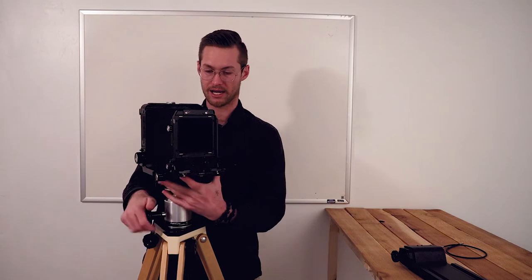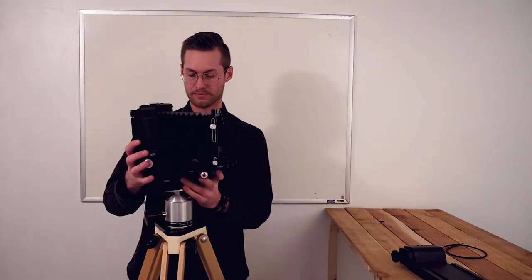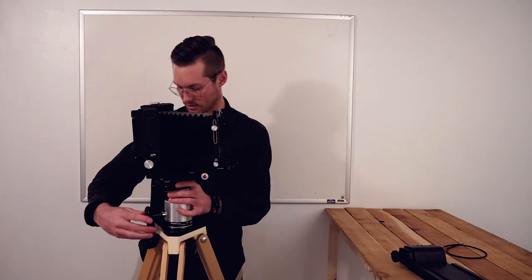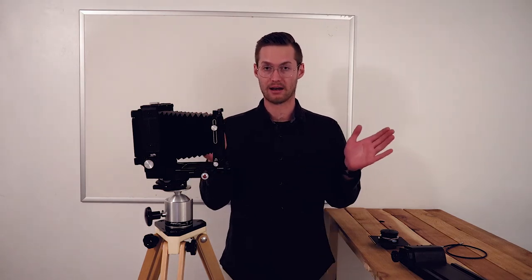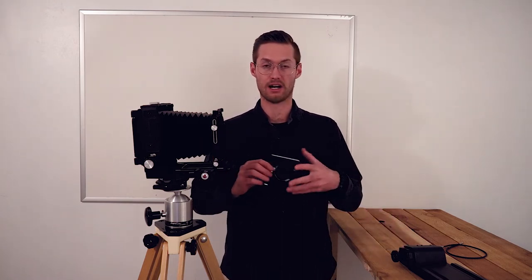Let me show you what a lens looks like. This is 150 millimeters, which is a normal view. That means the angle of view with this 150 millimeter lens is the same angle of view as a 50 millimeter lens on a full frame or 35 millimeter camera. So if you have a 50 millimeter lens on a 35 millimeter film or digital camera, you'll have the same angle of view as this 150 millimeter lens on this large format 4x5 camera.